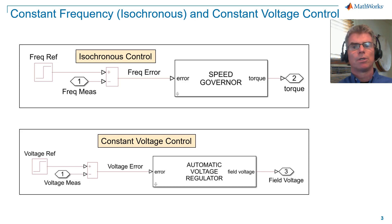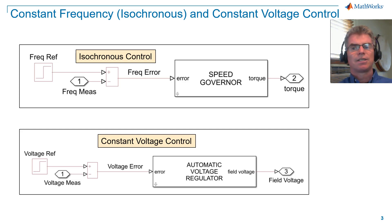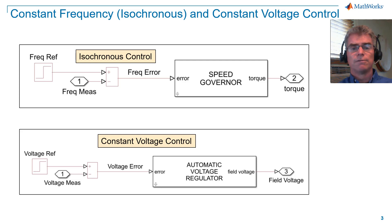The speed governor is responsible for regulating frequency, and an error signal that measures the difference between the desired frequency setpoint and the measured frequency is used to adjust fuel flow. The speed governor is designed specifically to reduce the frequency error signal to be as close to zero as possible. The automatic voltage regulator, or AVR, is responsible for regulating terminal voltage, and an error signal that measures the difference between the desired terminal voltage setpoint and the measured terminal voltage is used to adjust field voltage. The AVR is designed specifically to reduce the voltage error signal to be as close to zero as possible.